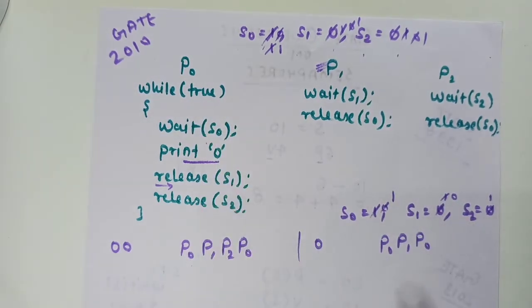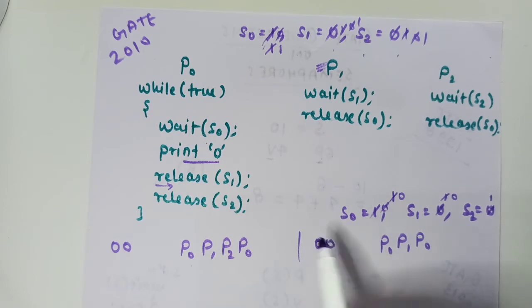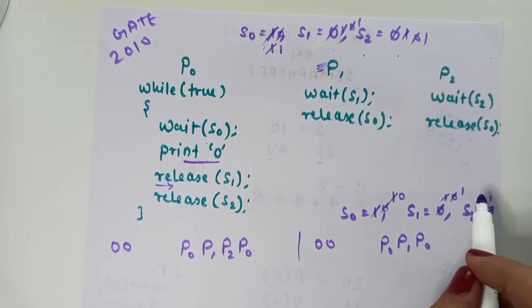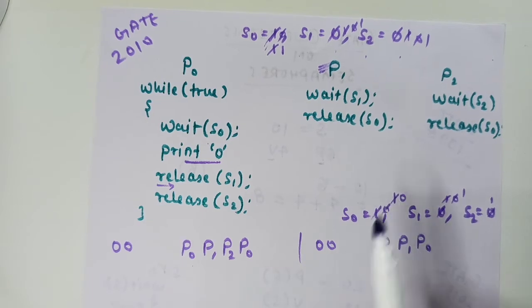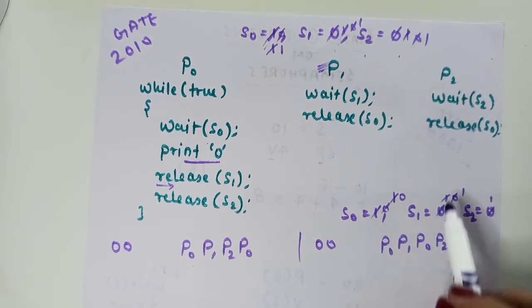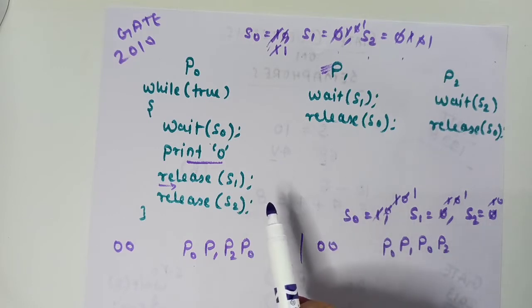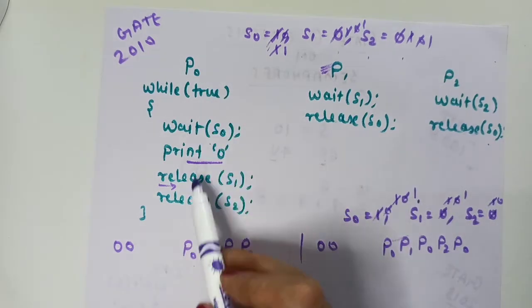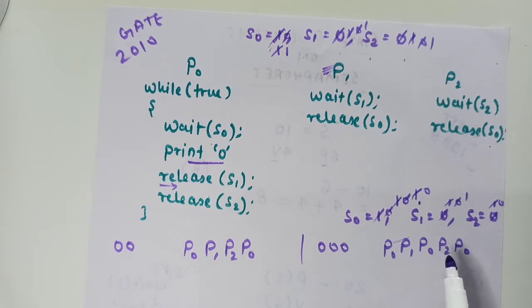Since P1 had no while loop, it will not come again. If P0 is selected next, wait on S0 succeeds, 0 is printed again. Then P0 releases S1 and S2. After that, P2 gets a chance — wait on S2 performs, then release S0 increments it to 1 again. So P0 can execute once more.